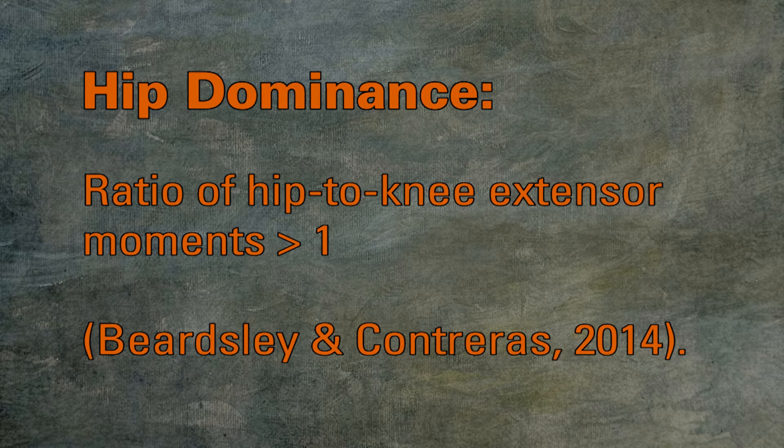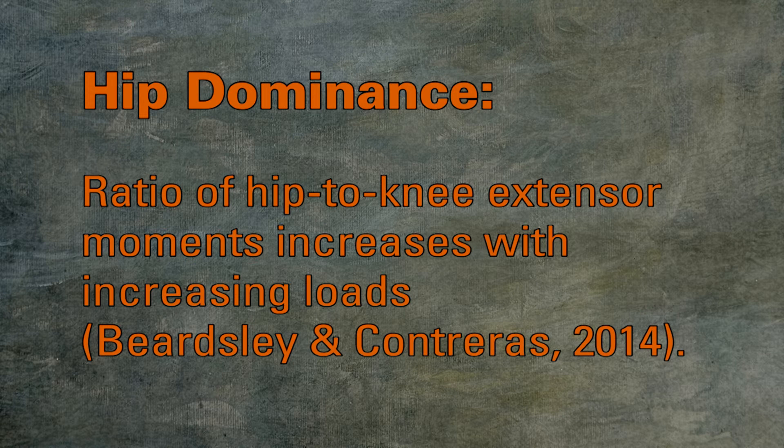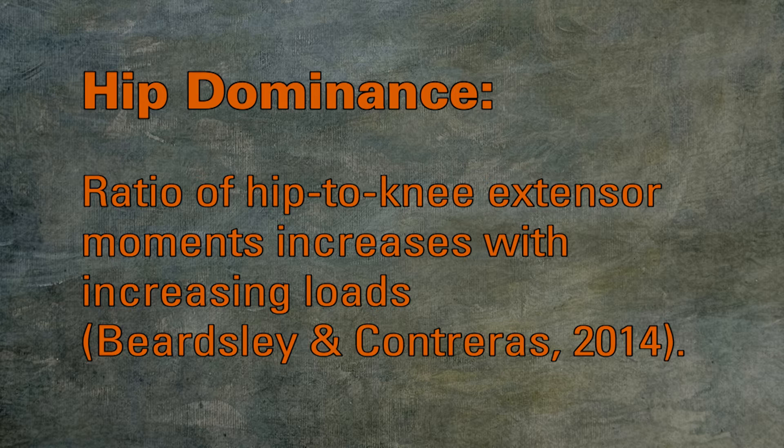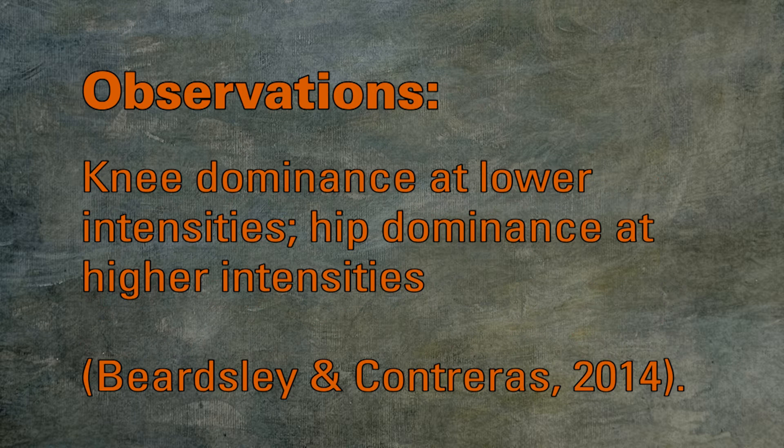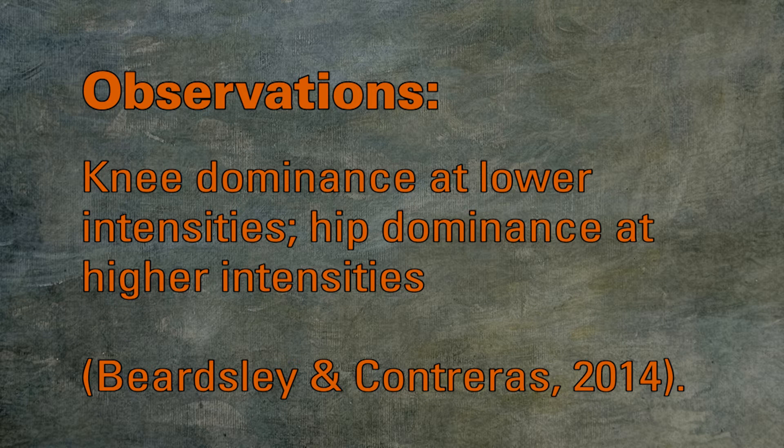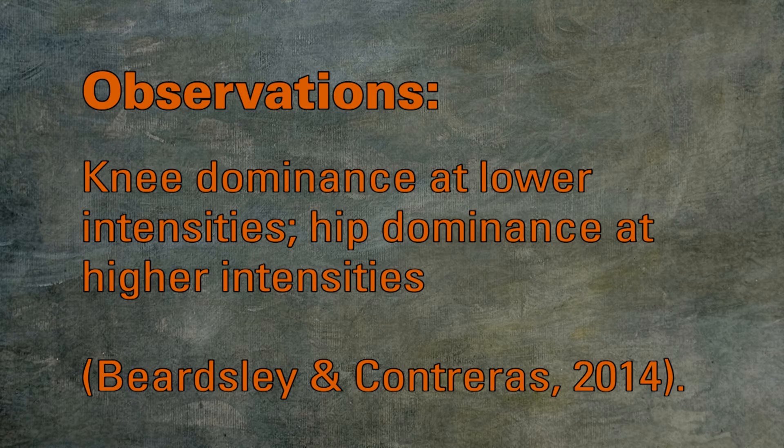Hip dominance is when the ratio of hip-to-knee extensor moments is greater than 1, indicating greater hip involvement. This ratio of hip-to-knee extensor moments has been found to increase with increasing load during squats, lunges, and deadlifts. This hip-to-knee extensor moments ratio also increases with increasing demands for speed, such as in running or jumping. These observations indicate a shift from knee dominance at lower intensities to hip dominance at higher intensities.